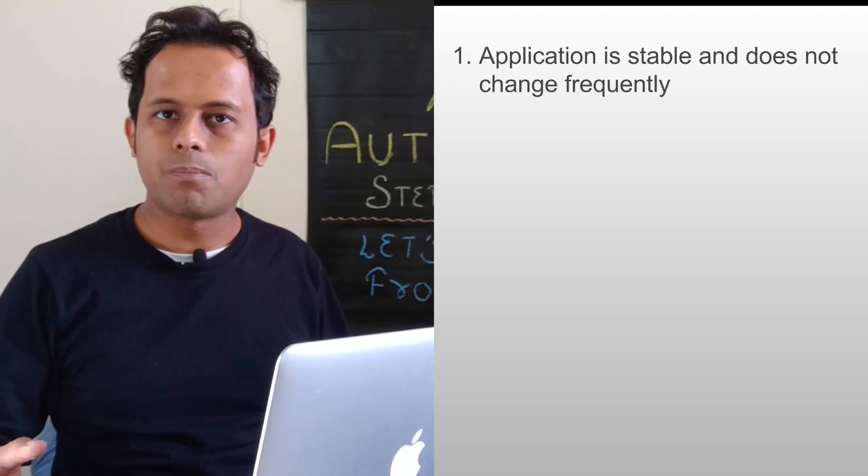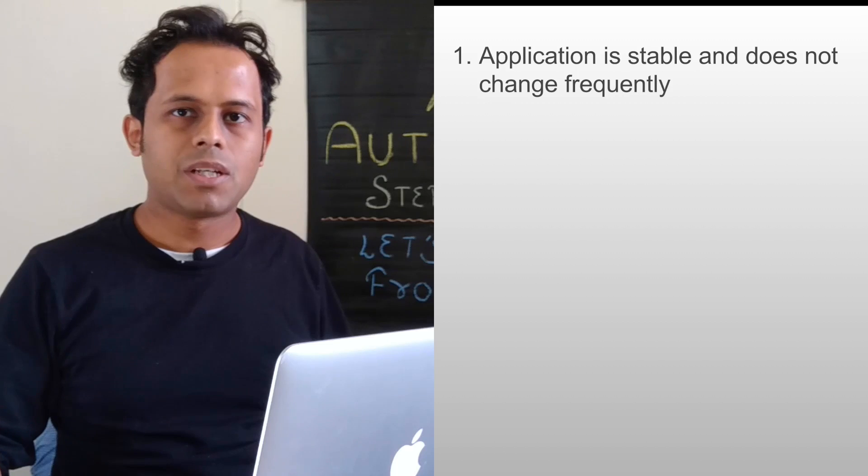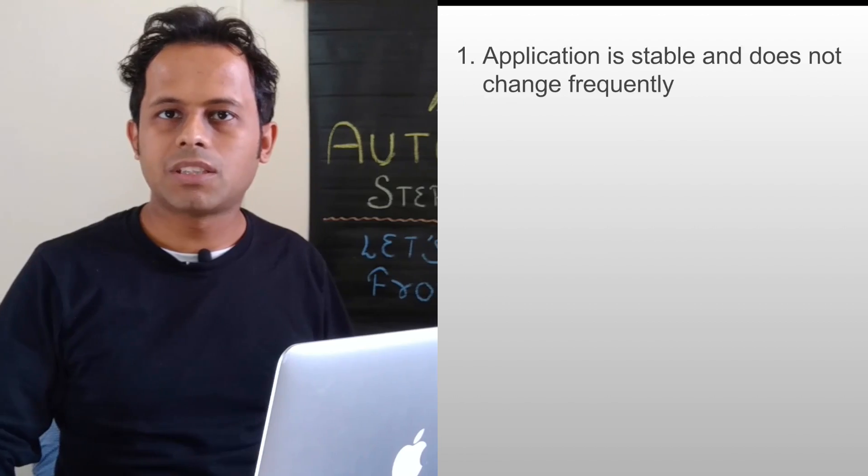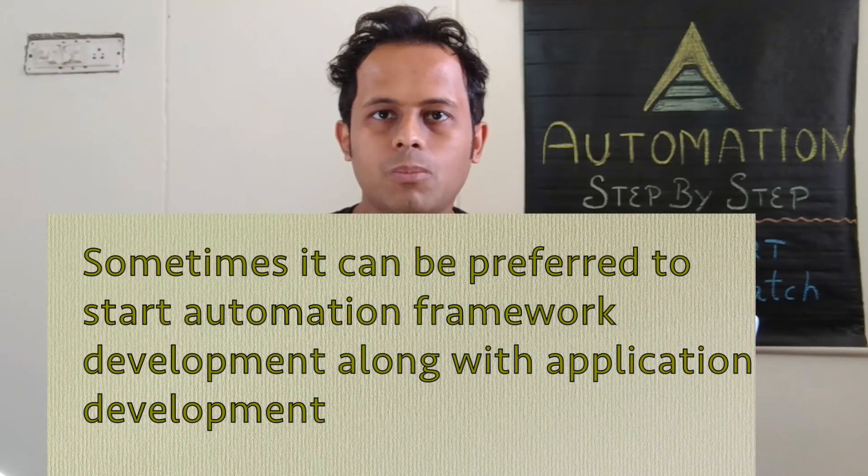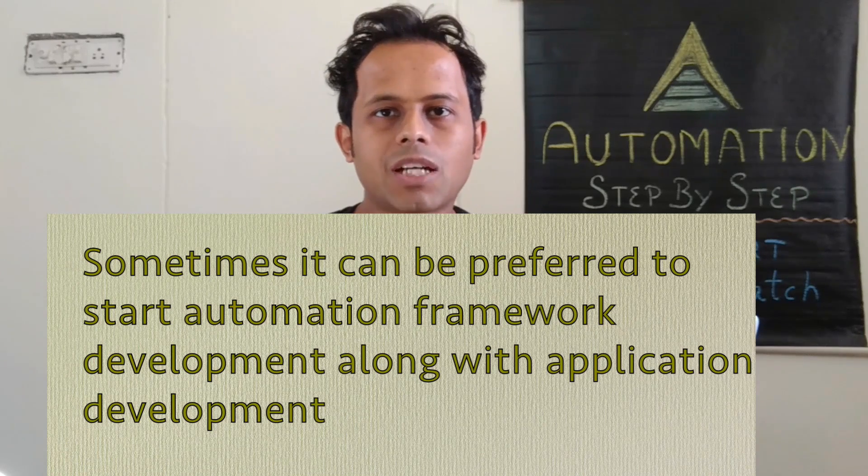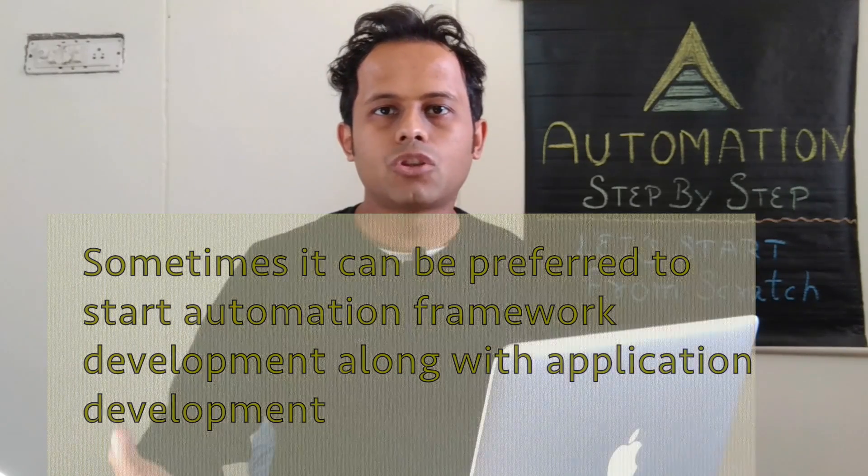Now there are some organizations who start automation along with development so that by the time development is over we have a stable automation framework and we also have automation scripts so that we can start automation right away. Now this approach also works in some cases, but most of the times we say that the application should be stable enough for automation to take place.